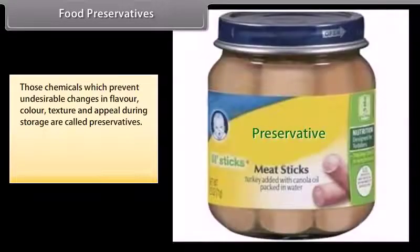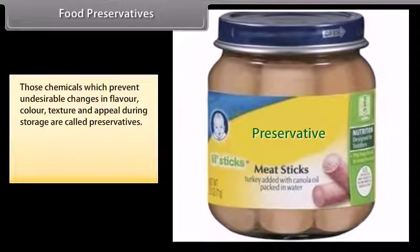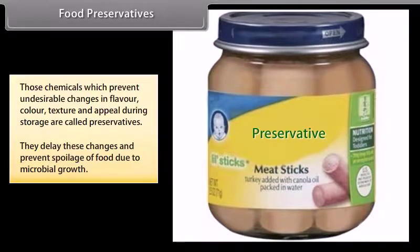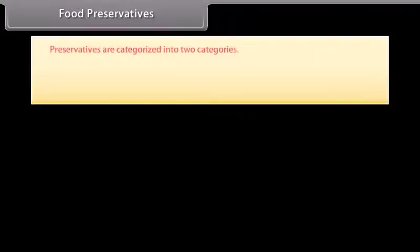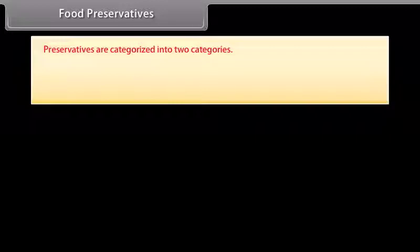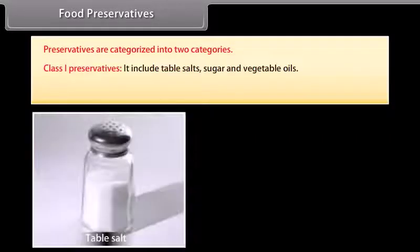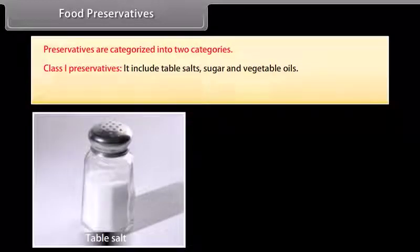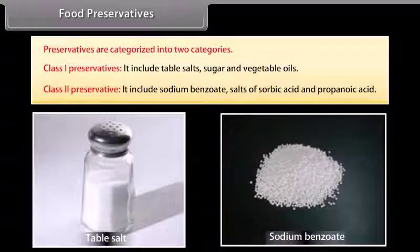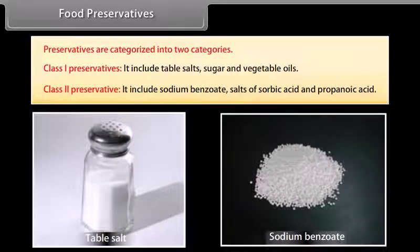Food preservatives: those chemicals which prevent undesirable changes in flavor, color, texture, and appeal during storage are called preservatives. They delay these changes and prevent spoilage of food due to microbial growth. Preservatives are categorized into two classes: Class 1 includes stable salts, sugar, and vegetable oils; Class 2 includes sodium benzoate, salts of sorbic acid, and propanoic acid.